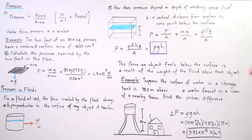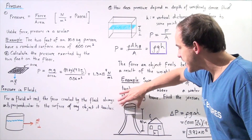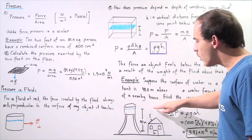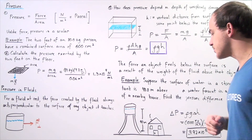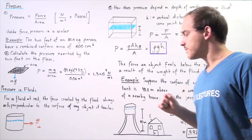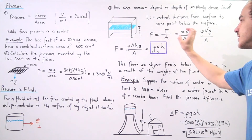Let's look at the following example. Suppose the surface of water in a storage tank is 40 meters above a water faucet in a room of a nearby house. Find the pressure difference. Here we have the storage tank containing water and the distance from the top of the water to the faucet is 40 meters. To calculate the pressure difference, we use the formula: pressure difference equals density times g times the change in height.